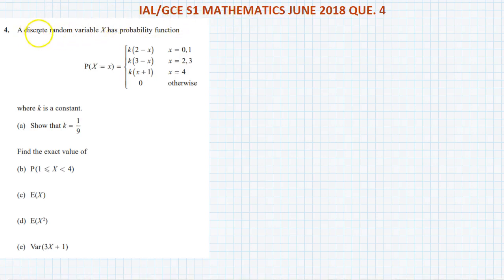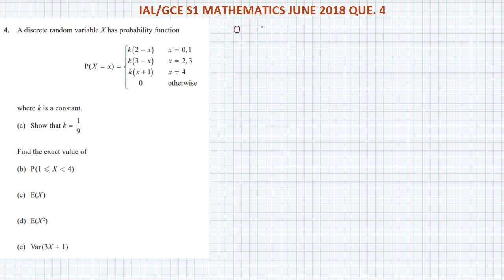Question number four: our discrete random variable X has probability function P(X) equal to K(2 minus X) at X = 0 and 1, K(3 minus X) at X = 2 and 3, K(X minus 1) at X = 4, and 0 otherwise.